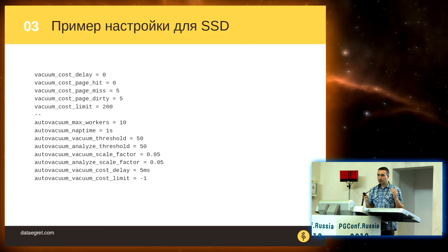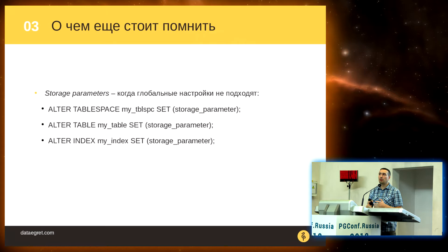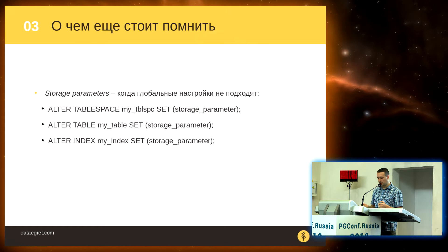This is an example of settings we use for SSD disks for our customers — you can download the slides and use them in your work. But note: these are settings for SSD. When you set up your vacuum, you may need individual parameters for particular tables or indexes. You have huge indexes or huge tables, or you need to run vacuum often — then use the individual parameters of vacuum, set using storage parameters. You can specify settings per table or per index. It is a very good tool and you need to remember it is there.